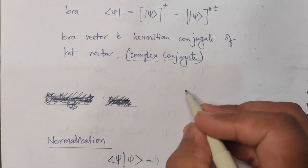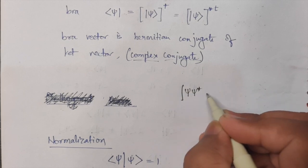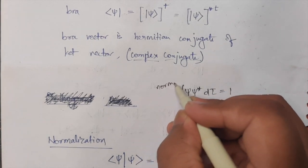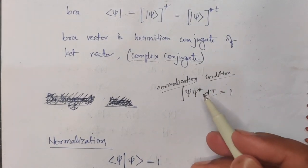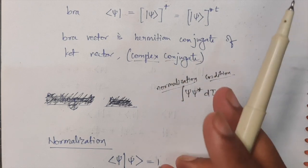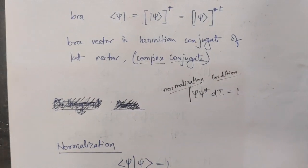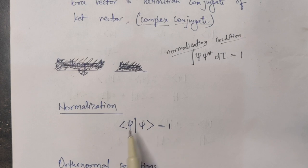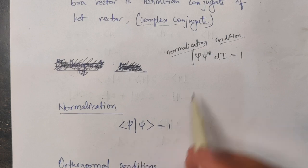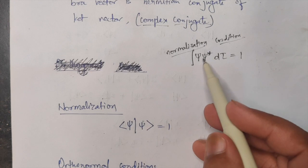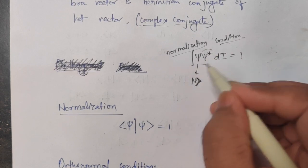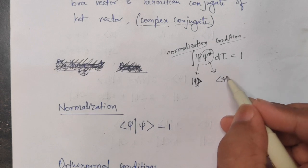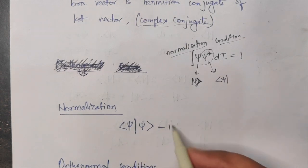One thing you might have already seen is: integral of psi times psi-star d-tau equals one. This is called your normalization condition, which we've been talking about since long in our previous videos on wave functions. Basically, the normalization condition can be expressed in Dirac notation as bra-Psi ket-Psi. This psi-star is the bra vector of the ket psi, and that's how we get the normalization condition.